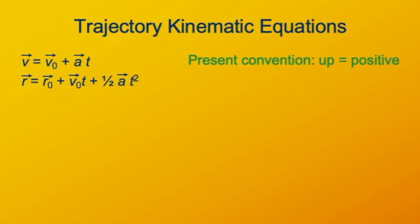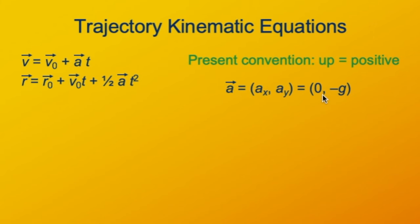I'm going to adopt the convention that up is positive. There's no physical reason you have to do this — it's an arbitrary choice. So the acceleration is a vector with x and y components, where x is horizontal and y is vertical. The x component of acceleration is zero, because there is no component of the force in the x direction. The y component of acceleration is negative g. Why negative? Because up is positive and gravity is pulling down, which gives a negative acceleration.